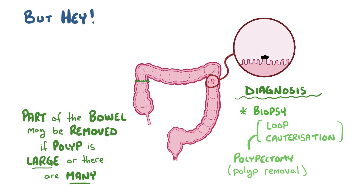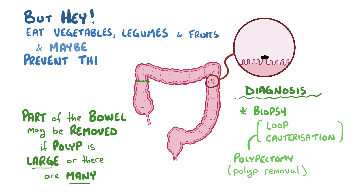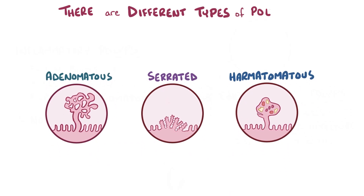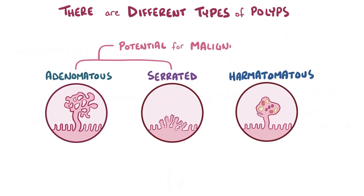Fortunately, there's evidence that a healthy diet with lots of green vegetables, legumes, and fruits can help prevent polyps from forming in the first place. As a quick recap: there are different types of polyps, and the ones that have the potential to become malignant are the adenomatous polyps and serrated polyps. Typically, polyps are found on colonoscopy and can be removed with a polypectomy.